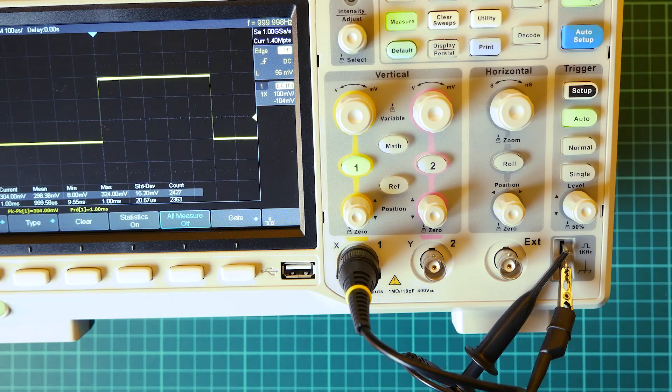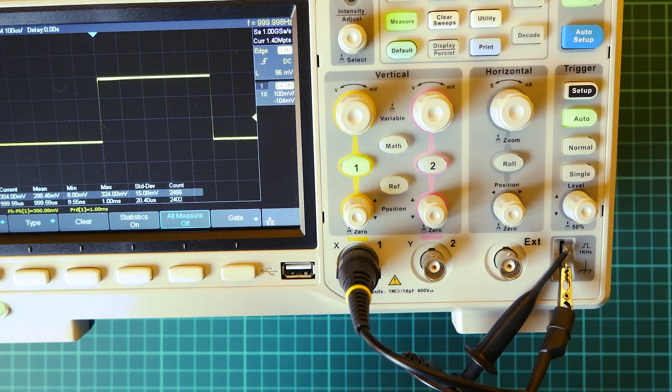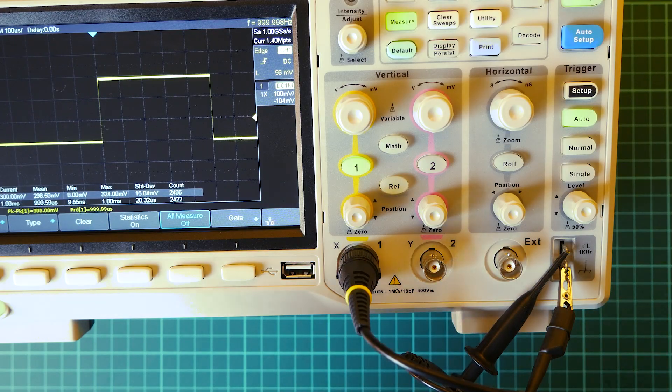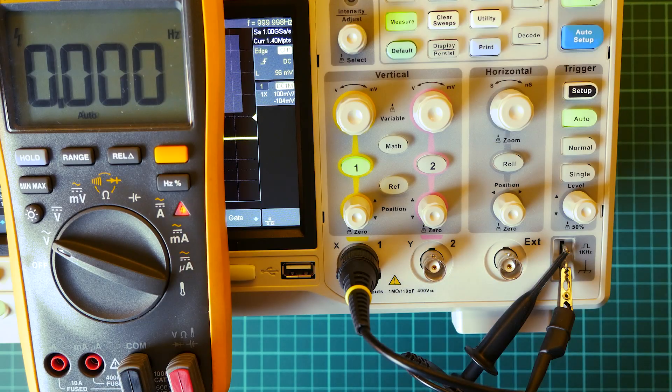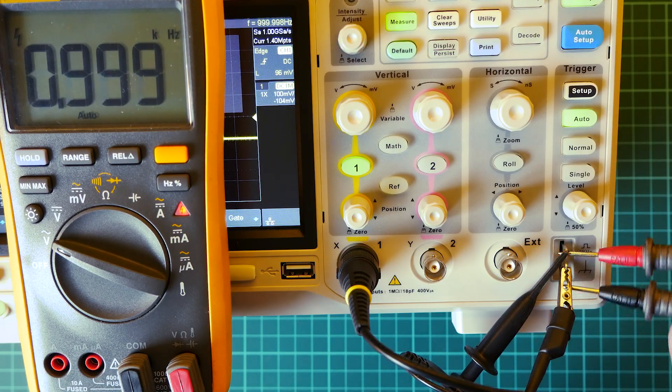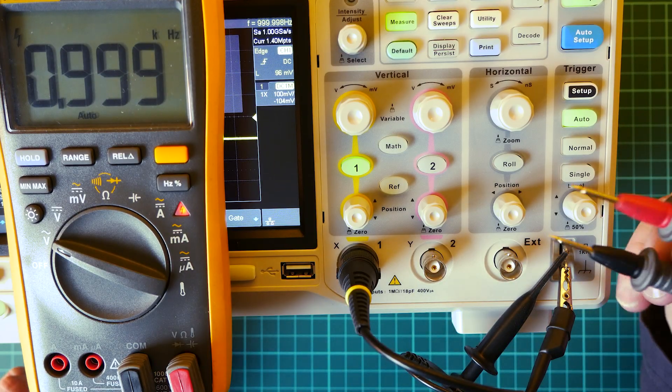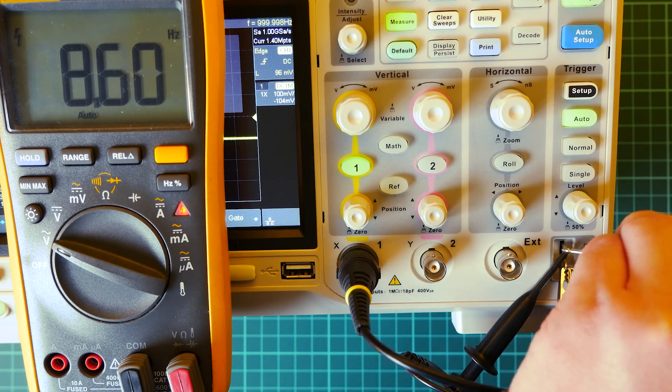So I use same probes on my Fluke multimeter. And as you can see it shows one kilohertz. No issue. So I don't know what's going on with this Unity multimeter.